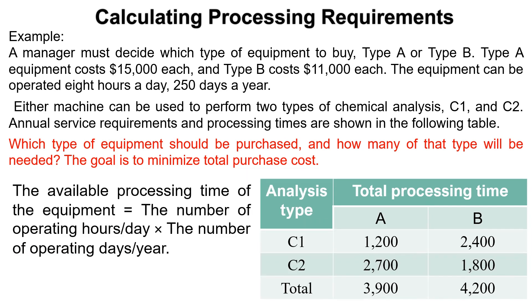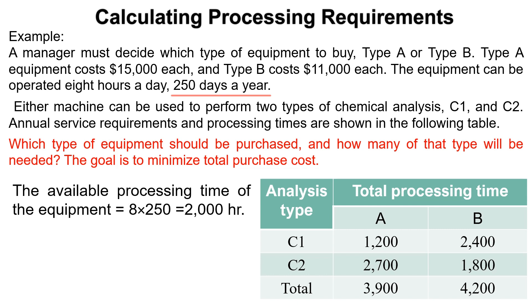Now calculate the available processing time of the equipment by multiplying the number of operating hours per day by the number of operating days per year. That is 8 times 250, which equals 2,000 hours.